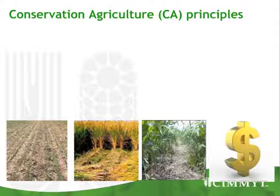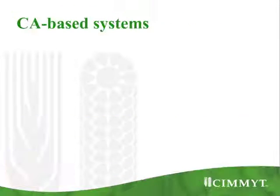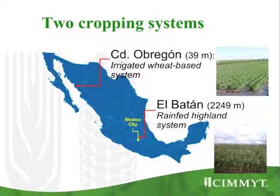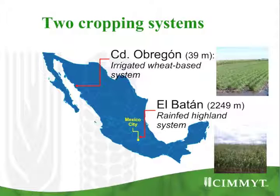I'm going to talk about two sites in Mexico where we are working. The big advantage I have in Mexico is that we have a lot of variability within the different management systems. I'm going to talk about the one in El Batán, which is in the center of Mexico, 2,250 meters above sea level, and it's a rain-fed highland system. I'm also going to talk about the system in the north, which we call Ciudad Obregón, which is only 40 meters above sea level, and it's an irrigated wheat-based system.